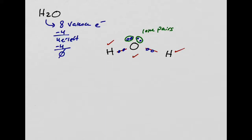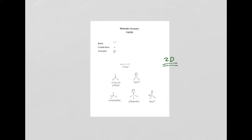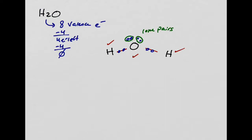Next time you're drinking water you can say you know how to draw it. Now the geometry: center atom oxygen has two bonds and two lone pairs. Center atom, two bonds, two lone pairs — the geometry is bent.